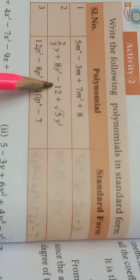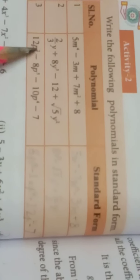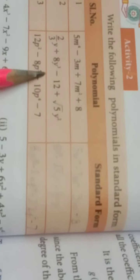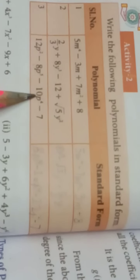For y: powers are 3, 1, and 2 — so greatest first: 8y³ plus root 5 y² plus 2 by 3 y minus 12. For the third expression with p: powers are 2, 5, and 4, plus a constant. Starting from the highest: minus 8p⁵ minus 10p⁴ plus 12p² minus 7.